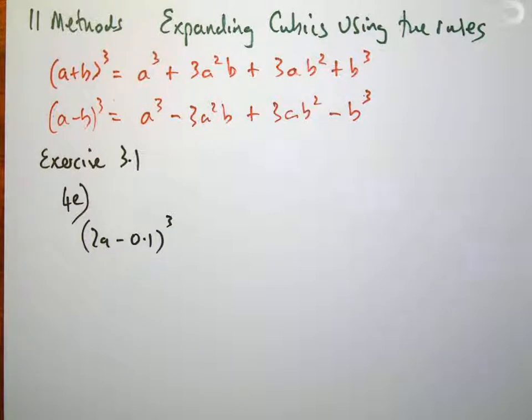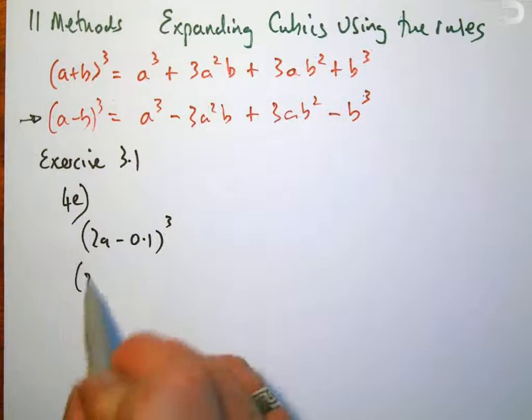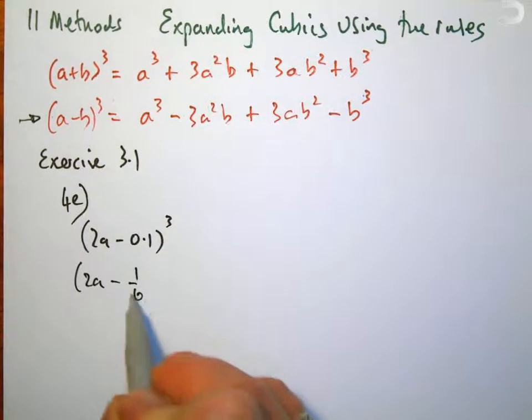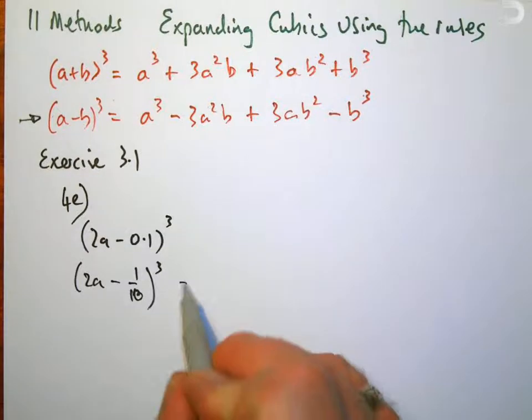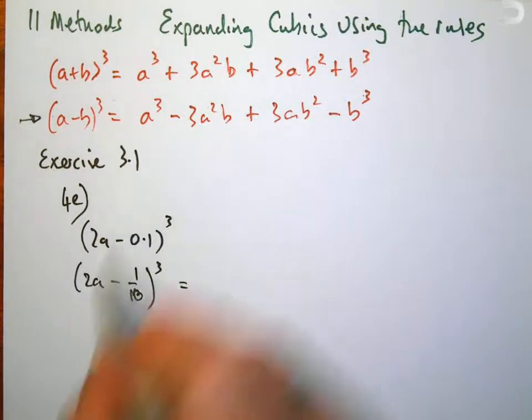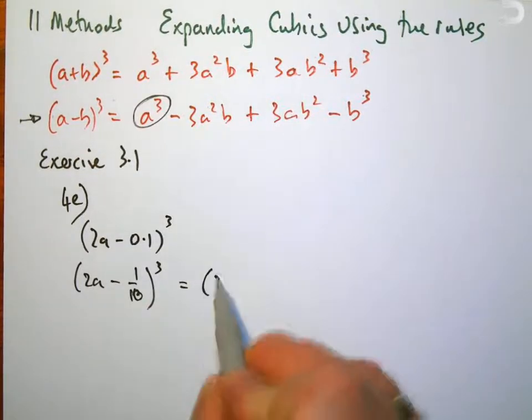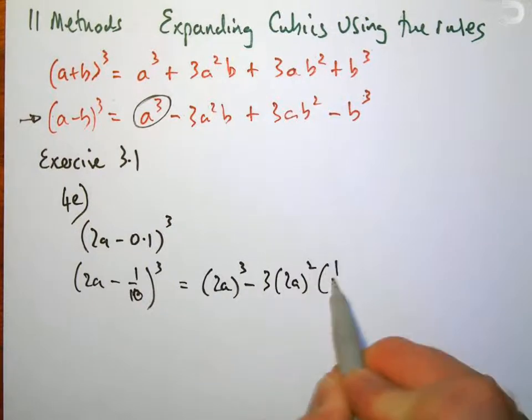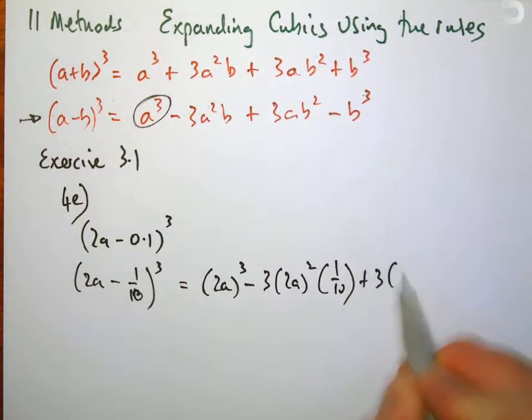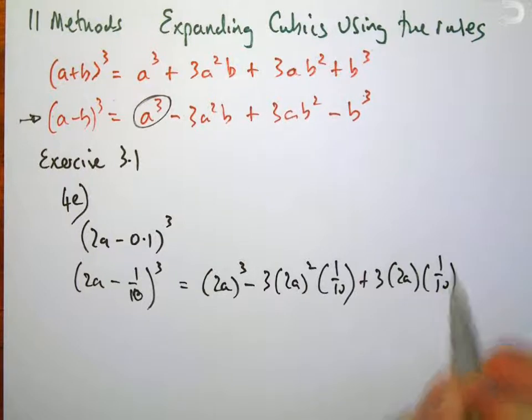So I'm going to be using this particular rule since it's a minus b, and I'm going to change 2a into (2a - 1/10)³. That's going to equal the first expression cubed, so (2a)³ - 3(2a)²(1/10) + 3(2a)(1/10)² - (1/10)³.